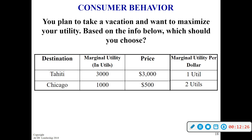Student question: wouldn't you still get more utils going to Tahiti since you're spending more money and getting more happiness? Because if you get one util per dollar you have 3,000 utils, but if you get two utils per dollar at Chicago you only have 1,000. Yeah, but it's kind of a measure of efficiency — you're trying to maximize utils per dollar spent. That's the goal.